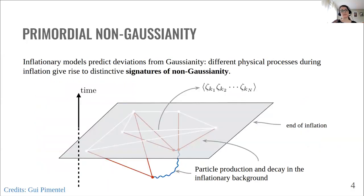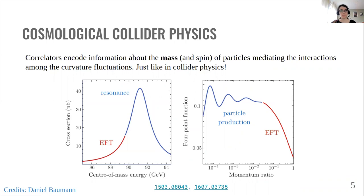Now, many theoretical models that agree with observations predict relatively strong non-Gaussian signals. We know that different physical processes during inflation, mediated for example by particles with certain mass and spin characteristics, at the end of inflation will leave distinctive signatures in the non-Gaussian signal, namely in the correlations between the perturbations. So, the study of correlations provides information about the mass and the spin of particles that mediate the primordial interactions.